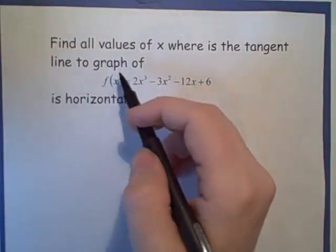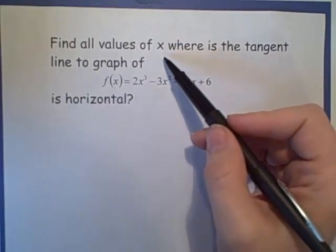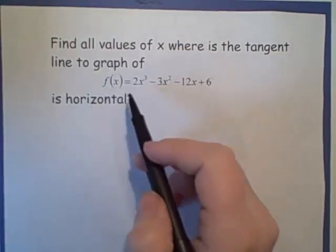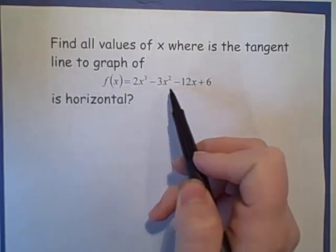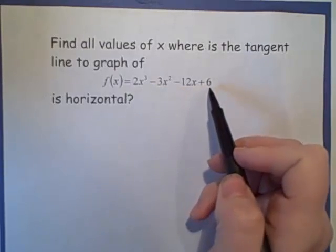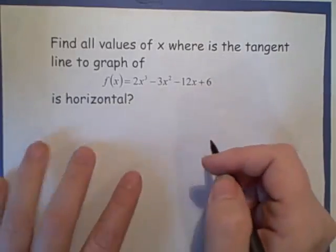So in this video we are going to find all the values of x where the tangent line to the graph of f(x) equals 2x cubed minus 3x squared minus 12x plus 6 is horizontal.